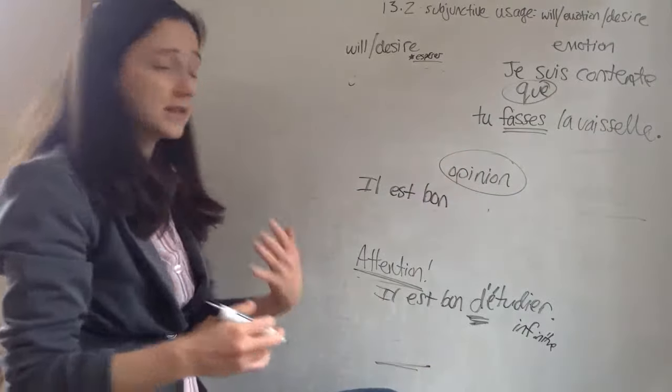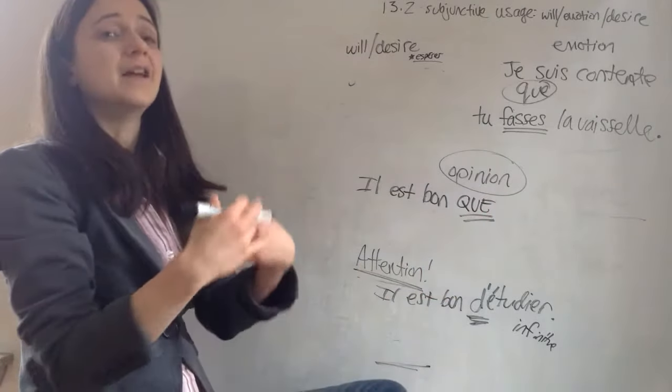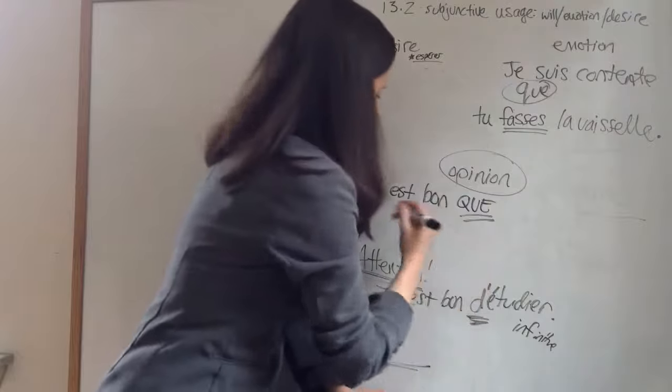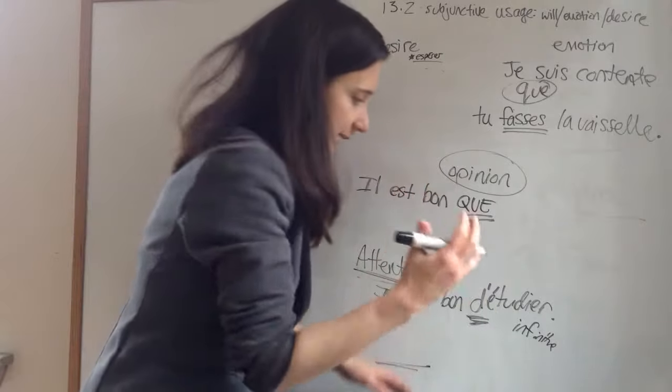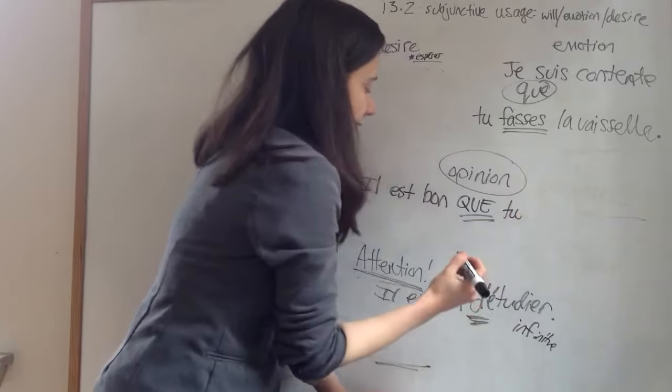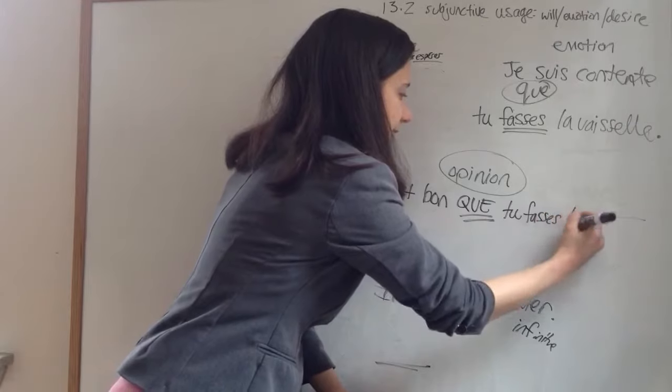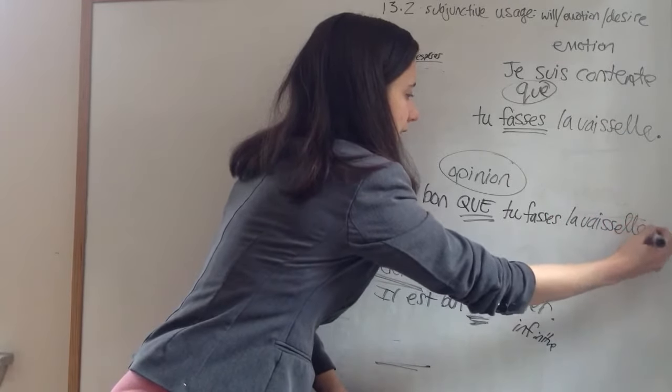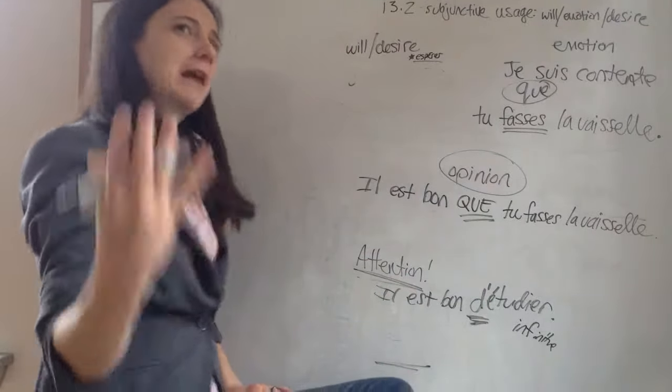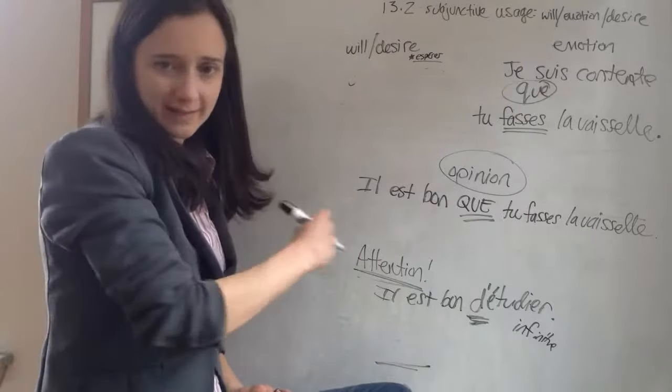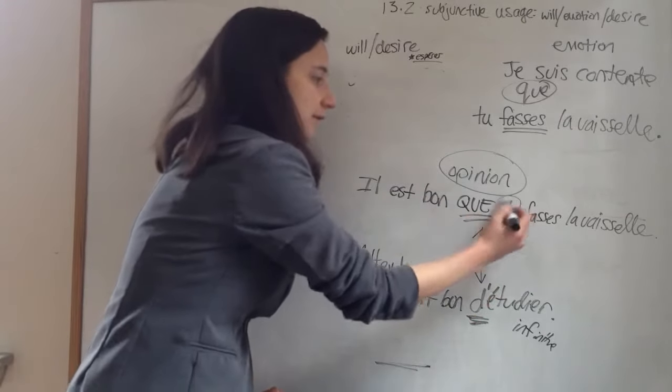But for here, remember, all we just do is put in, instead of de, we put in que. Il est bon que. And then we add our separate subject. So il est bon que, tu es bon que, qu'il est bon que. So bon que tu, well let's just stick with our dishes here, fasses. So it's my opinion, it's good for you, it's good for you to do the dishes. It teaches character. Il est bon que tu fasses la vaisselle. So we have que versus the de, and we have new subject here.